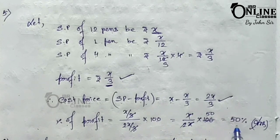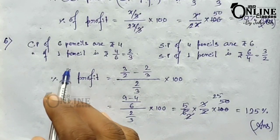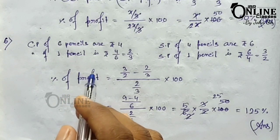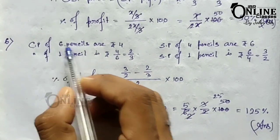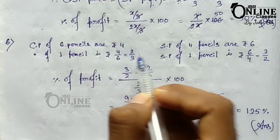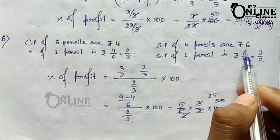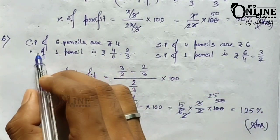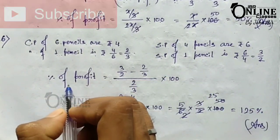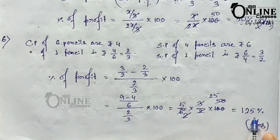In problem number six, a man bought pencils at the rate of 6 for rupees 4 and sold them at 4 for rupees 6. CP of one pencil equals 4/6 = 2/3. SP of one pencil equals 6/4 = 3/2. Using the profit formula: (SP minus CP) divided by CP, into 100 = (3/2 minus 2/3) divided by (2/3), into 100 = 125%. The profit percentage is 125%.